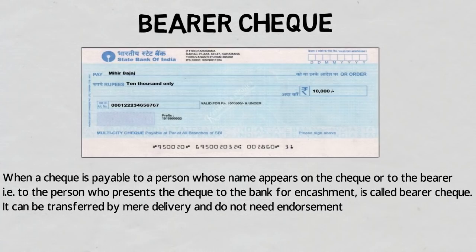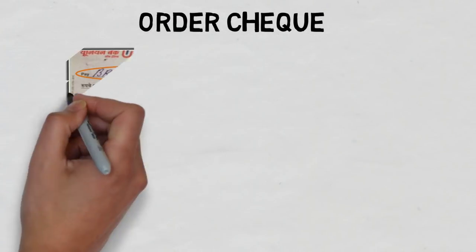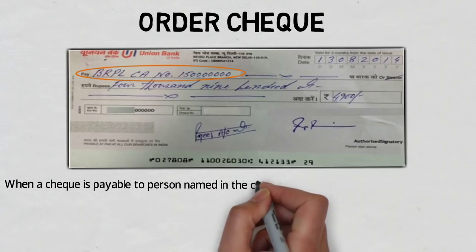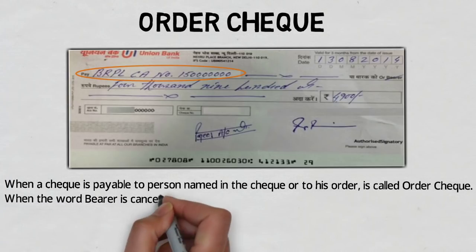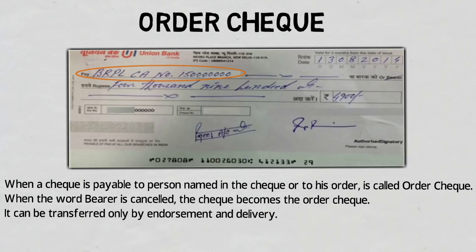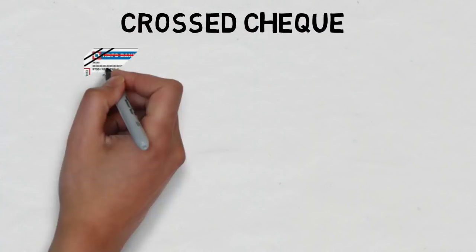The second type of open check is the order check. An order check is when a check is payable to the person named in the check or to their order. When the word 'bearer' is cancelled, the check becomes an order check. It can be transferred only by endorsement and delivery, meaning the person needs to sign and mention to whom the money is to be paid — that is called endorsement.